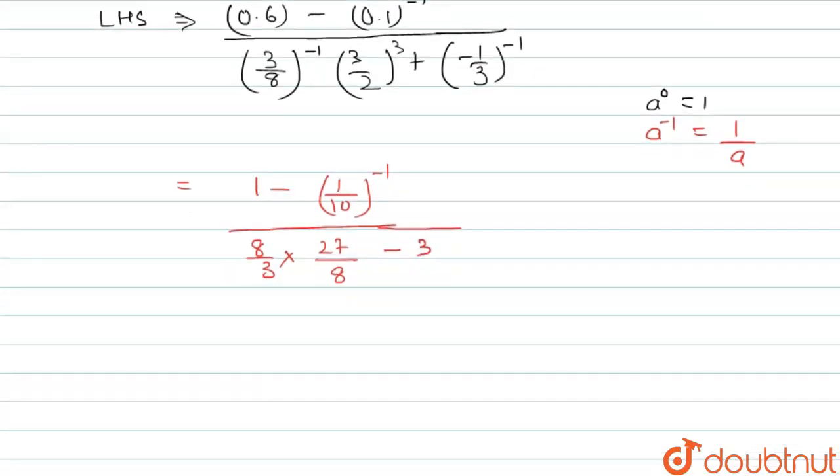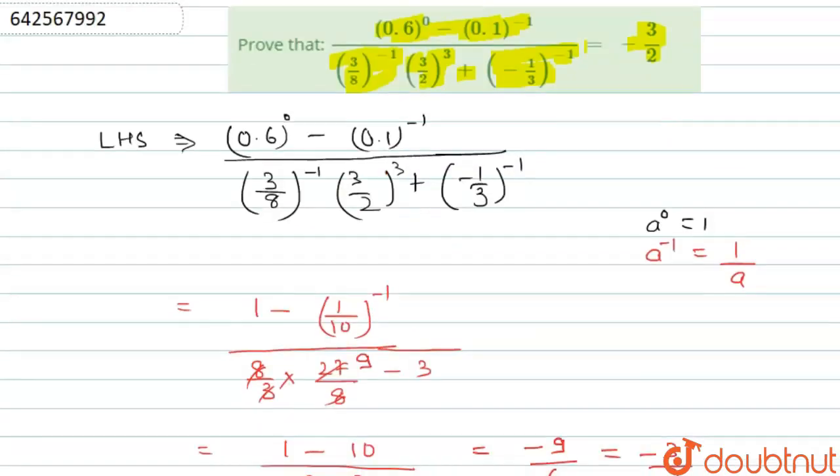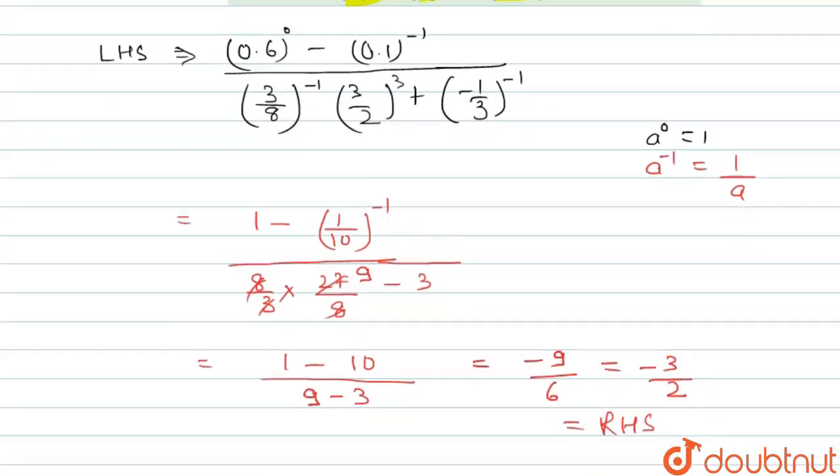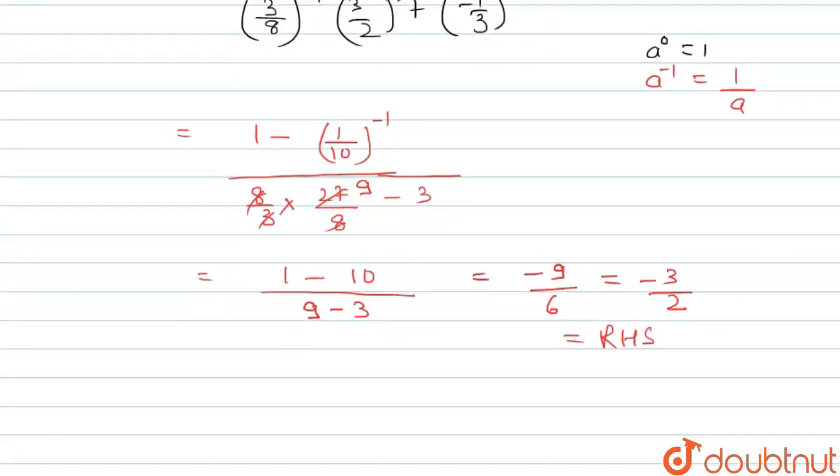So from solving this, we will get 1 minus 10 upon 9 minus 3, which will give us minus 9 upon 6, which will be equal to minus 3 by 2, which is our RHS of the given expression. So we are able to prove that LHS is equal to RHS of the given expression.